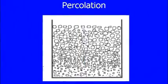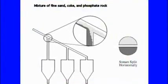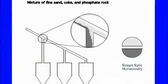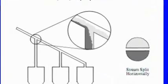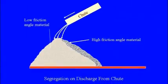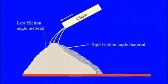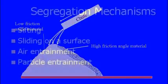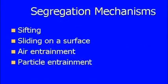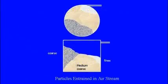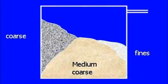Topics covered in Lecture 5 include sifting and fluidization segregation, along with segregation effects of flow through shoots and transfer points. Several examples of each mechanism are discussed in detail, along with examples of common problems and their solutions.